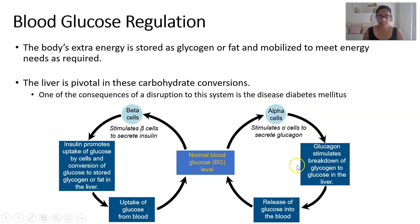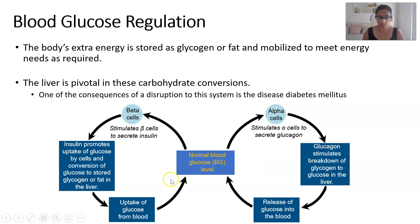This diagram here is another graphic to help you understand how glucose, glycogen, fat, and the liver all interact with each other to maintain a normal blood glucose level. Please take the time to look at this diagram and make sure that you understand it. If you have any questions, please get back to me.